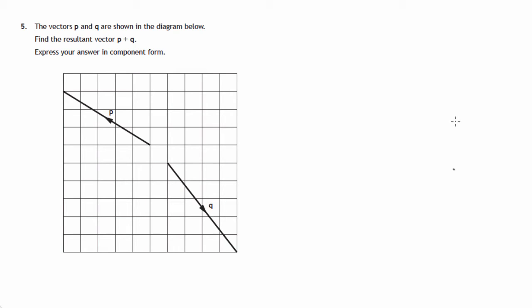This is question 5 from paper 2 of the 2015 National 5 SQA Maths exam. We're shown a couple of vectors, P and Q, and we're asked to find the components of the resultant vector P plus Q.